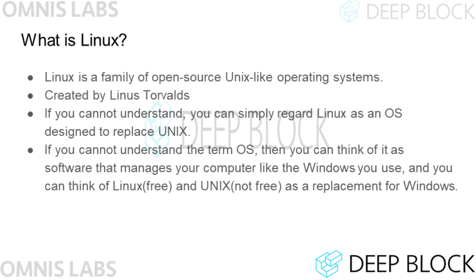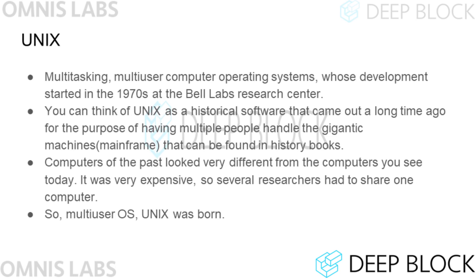If you do not understand what an operating system is, you can think of it as software that manages your program, like Windows. Unix, the origin of Linux, is a computer operating system that supports multitasking and multi-users. Development began at Bell Labs in the 1970s. Computers of the past were very expensive and large, so several researchers in an institution had to share one computer. Unix was born from efforts to develop an OS where multiple users could each run a program on a single computer, and Linux was developed as part of a movement to create an open source operating system similar to Unix.